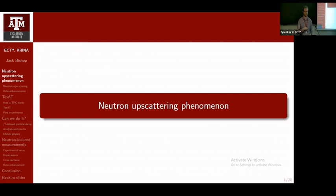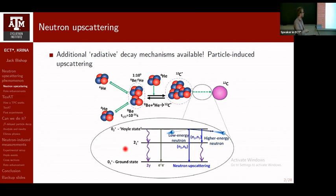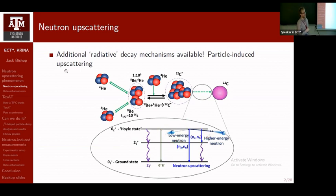What is the neutron upscattering phenomenon? We're focusing on the triple-alpha process: alpha particles come together, form the intermediate beryllium-8, a third alpha particle sticks on, and we populate the Hoyle state. To create carbon-12 and complete the triple-alpha cycle, it usually undergoes sequential gamma decay through the 2+ state, or pair production — though that's much smaller. In a very high neutron density environment, a low-energy neutron can come along while you're still in the Hoyle state, steal away some energy — a low-energy neutron comes in, a high-energy neutron goes out — allowing transition to the 2+ state or ground state. This is an additional way to drive the transition down to the carbon-12 ground state.